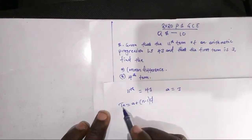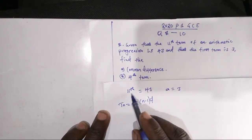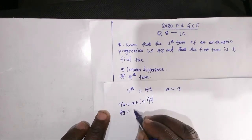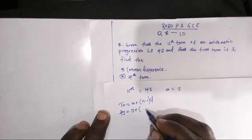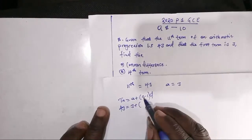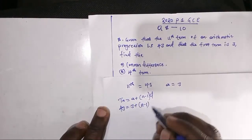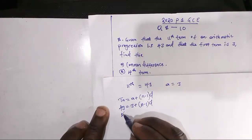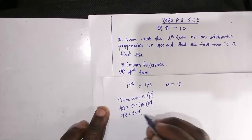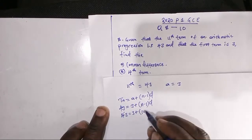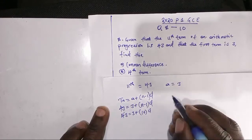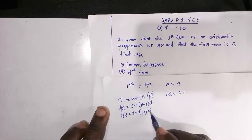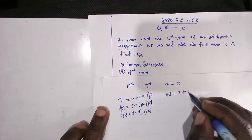Then we have to substitute. We are told that the 11th term equals 43, so here it would be: 43 equals 3 plus open bracket, the nth term is 11 minus 1, then the difference D. So we have 43 equals 3 plus open bracket 11 minus 1, which is 10, then D. That gives us 43 equals 3 plus 10D.